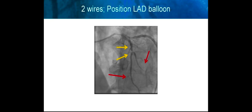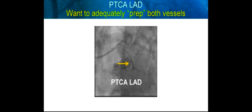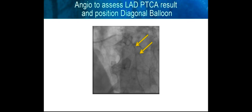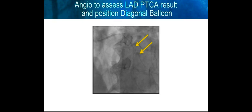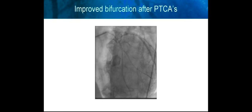Both vessels are wired, and here's a balloon in the LAD position to pre-treat the LAD first. Here's inflation of the balloon — very important that we want to adequately prep both vessels before implanting the Triton device. After this, here's the balloon in the diagonal vessel. We are checking our results of the preparation of the LAD and measuring in the diagonal before inflation, followed by angioplasty in the diagonal vessel. You can see the improved bifurcation preparation after angioplasty of both vessels. Both vessels are wired.